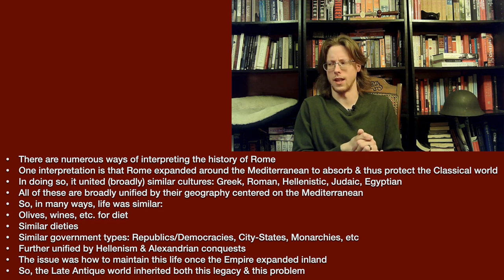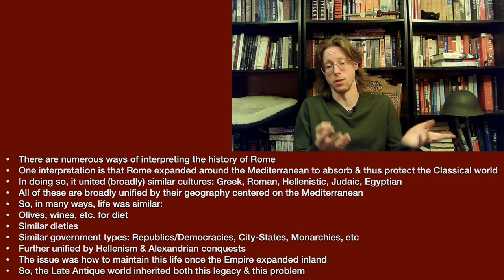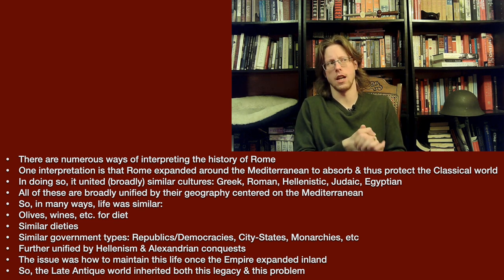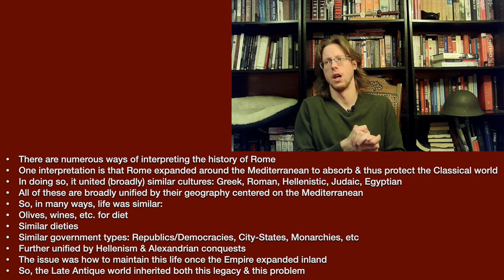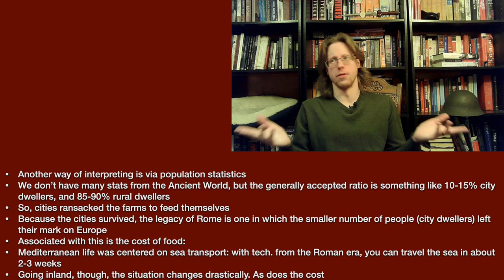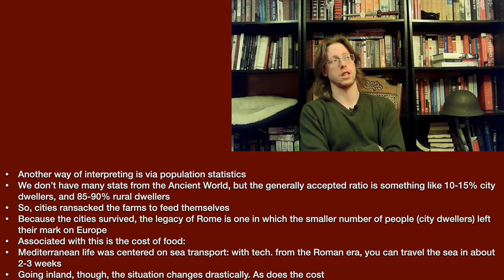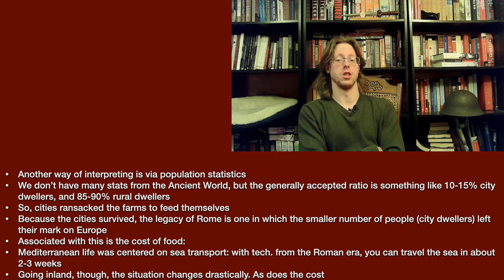The late antique world inherits this classical legacy, this idea of classical civilization, and it inherits this problem that classical civilization was trying to deal with. And as we're going to see, the late antique period tackles this question in its own somewhat unique way. Another way of interpreting classical civilization and ancient history in general, especially the Roman Empire, is via population statistics.